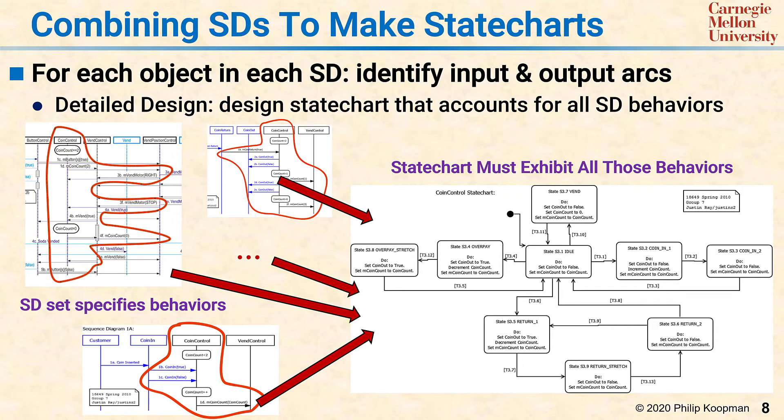If you see two input arrows that are the same on different sequence diagrams but produce different behaviors, that must mean they're accepted in different internal states, and so on. There are tools that can help support the synthesis, but they can be very picky about requiring absolutely perfect sequence diagrams that think of every eventuality.